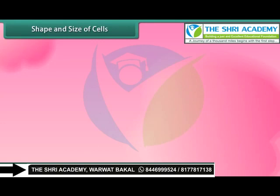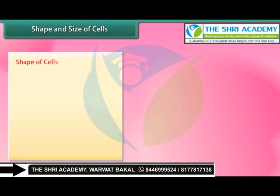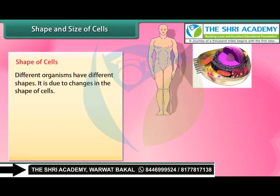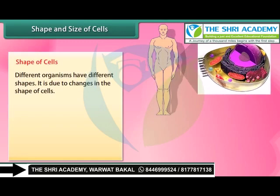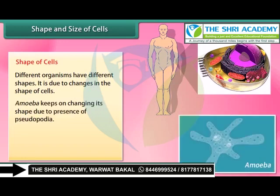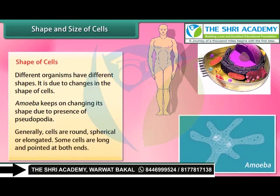Different organisms have different shapes, and this is due to changes in the shape of their cells. Amoeba keeps on changing its shape due to the presence of pseudopodia. Generally, cells are round, spherical, or elongated. Some cells are long and pointed at both ends.